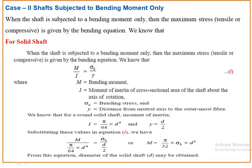The second case is when the shafts are subjected to bending moment only. In the previous case we saw when shafts are subjected to twisting moment. Now the second case is when shafts are subjected to bending moment only. When the shaft is subjected to bending moment only, the maximum stress — that is the bending stress due to pulleys and gears — is given by the bending equation.